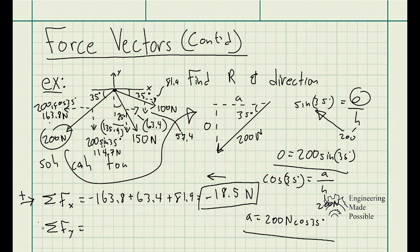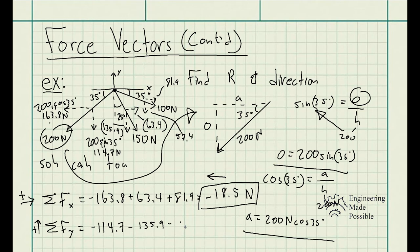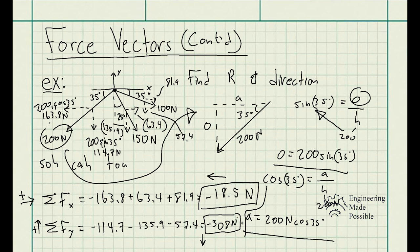Adding all the Y components, with upward as the positive direction: the first vector gives negative 114.7 newtons, the second is also negative 135.9 newtons, and the last is negative 57.4 newtons. Adding all three gives negative 308 newtons. The negative sign means the direction is downward — opposite of my assumed positive direction.